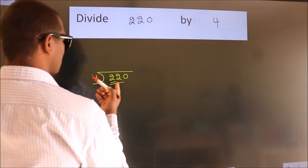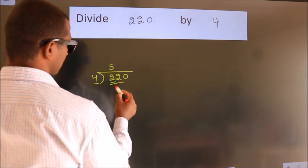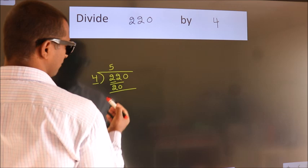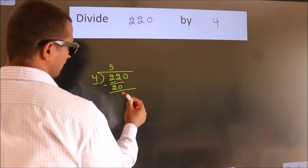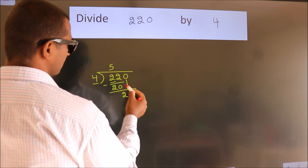A number close to 22 in the 4 table is 4 fives 20. Now we should subtract.